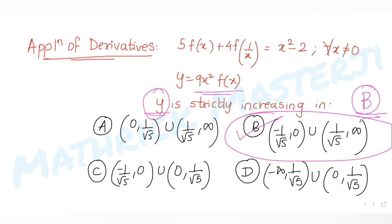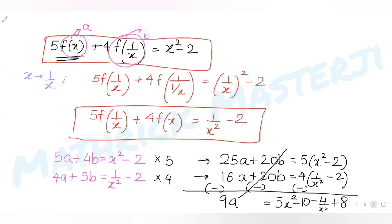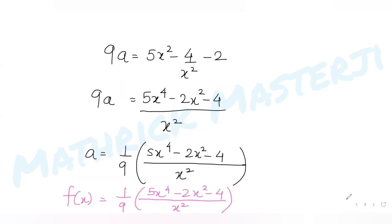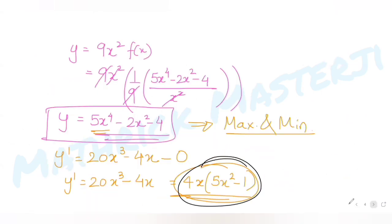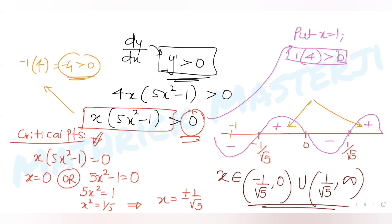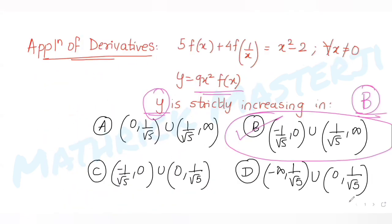To summarize: we had two equations involving f(x) and f(1/x). We replaced x with 1/x, solved the two equations to get f(x), then computed y = 9x²·f(x). Using increasing/decreasing function analysis, we found y is strictly increasing on two regions matching option B.